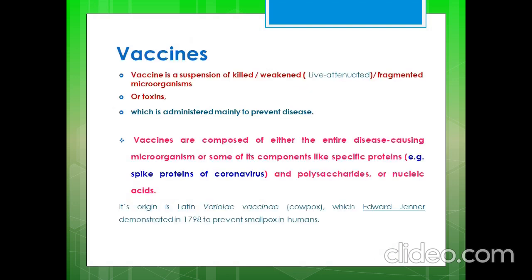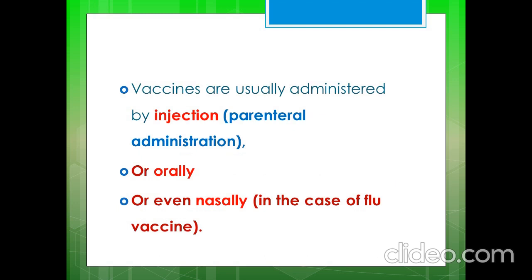Vaccine is a suspension of killed or live attenuated microorganisms, or fragmented microorganisms, or toxins, which is administered mainly to prevent disease. Vaccines are composed of either the entire disease-causing microorganisms or some of its components, like specific proteins — for example, spike proteins of coronavirus — and polysaccharides or nucleic acid. First, Edward Jenner demonstrated a vaccine to prevent smallpox in humans in 1798. They are usually administered by injection, orally, or even nasally. Vaccine is prepared in such a way that it can act as an antigen but will not create any disease; therefore, it is not harmful.